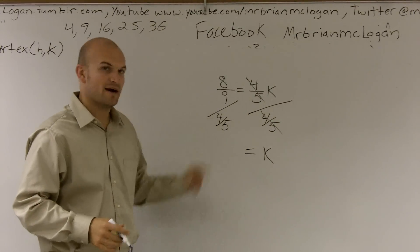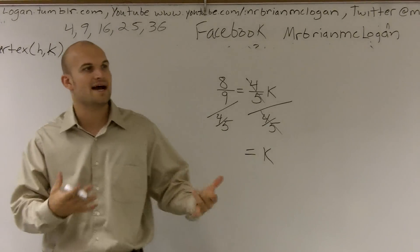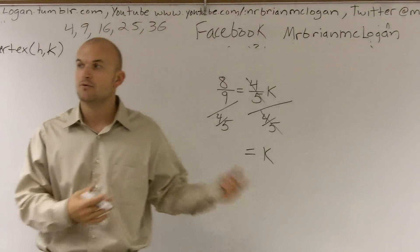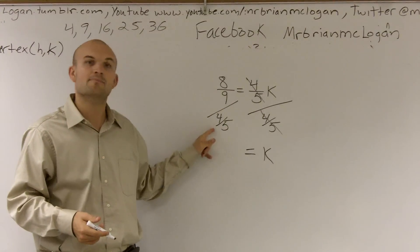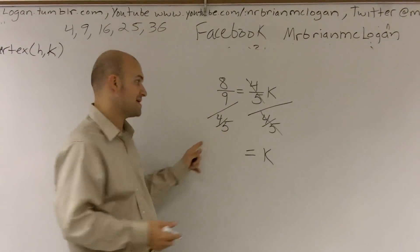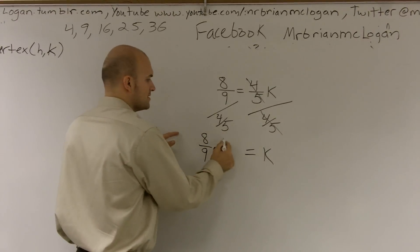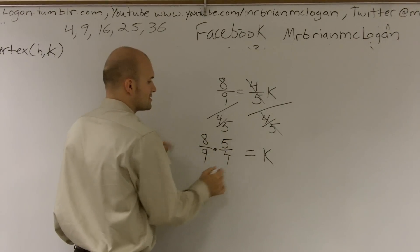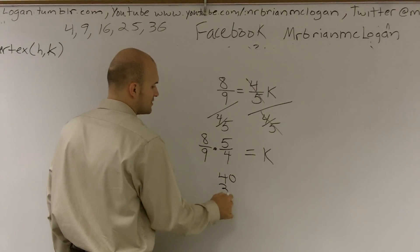Now we have eight-ninths divided by four-fifths. If you guys remember when we were dealing with fractions, we don't really divide our fractions. What we learned was instead of dividing fractions, we can flip the second fraction and multiply, and that will give us the exact same answer. So we can say eight-ninths multiplied by five-fourths. Eight times five is 40. Nine times four is 36.